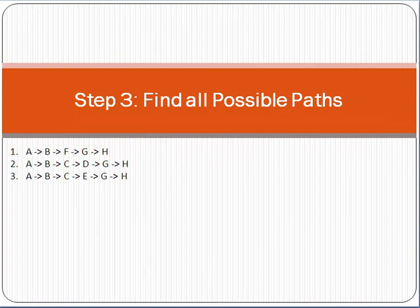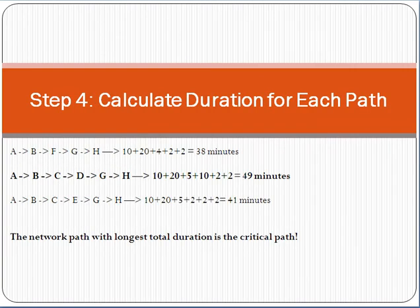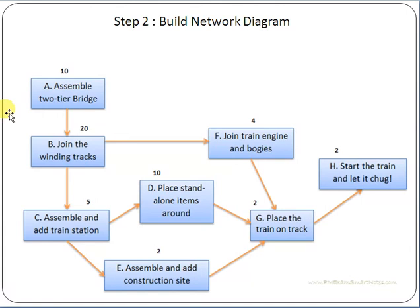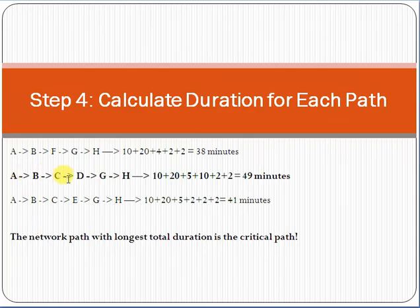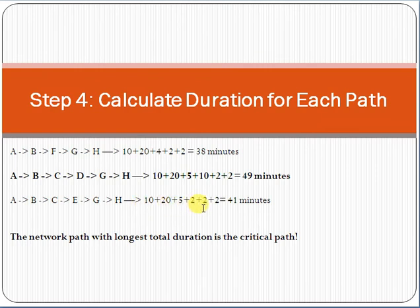Now calculate the duration for each path. Path A-B-F-G-H: 10 + 20 + 2 + 2 = 38 minutes. Path A-B-C-D-G-H: 10 + 20 + 5 + 10 + 2 + 2 = 49 minutes. Path A-B-C-E-G-H: 10 + 20 + 5 + 2 + 2 + 2 = 41 minutes.